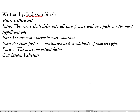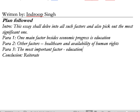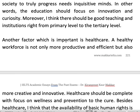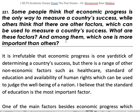This essay was written by Indroop Singh. In the introduction, we answer the question. Then one main factor besides economic progress is education. In the second paragraph, there are other factors such as health care and availability of human rights. Then in the third paragraph, education is the most important factor — note that the points put in the third paragraph are a little different from the first. All these essays are repeated in my book IELTS Academic Essays from the Past Exams, available online and in bookstores especially in Punjab, Gujarat, Kerala, and Haryana. Thank you very much for watching patiently.